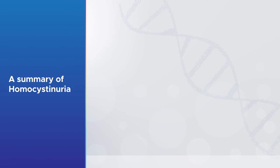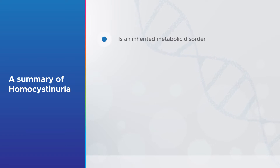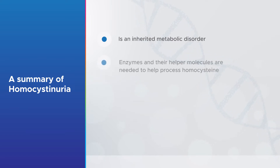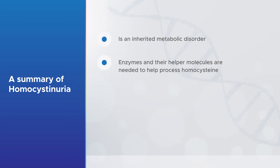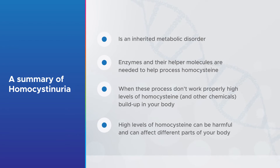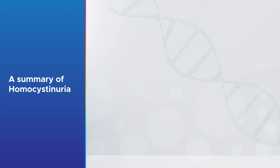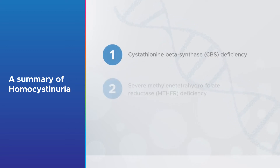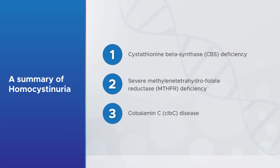To quickly summarise: homocystinuria is an inherited metabolic disorder. Our bodies need enzymes and their helper molecules to process homocysteine. When these processes don't work properly, high levels of homocysteine and other chemicals can build up in your body. High levels of homocysteine can be harmful and affect different parts of your body. There are many different forms of homocystinuria, each having its own causes, health issues, and treatments.